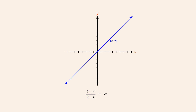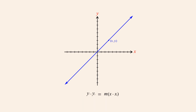This equation is easier to read if we rearrange it so that the y's are on the left side and the x's are on the right. To do this, we multiply both sides of the equation by x minus x1, which allows us to cancel the denominator x minus x1 on the left side. The result is the point-slope form of the equation for a line.